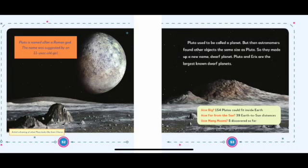Pluto is named after a Roman god. The name was suggested by an 11-year-old girl. Pluto used to be called a planet, but then astronomers found other objects the same size as Pluto, so they made up a new name, dwarf planet. Pluto and Eris are the largest known dwarf planets.